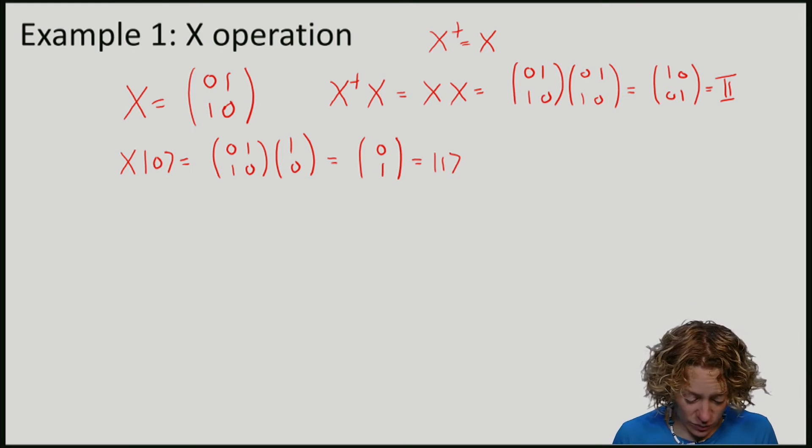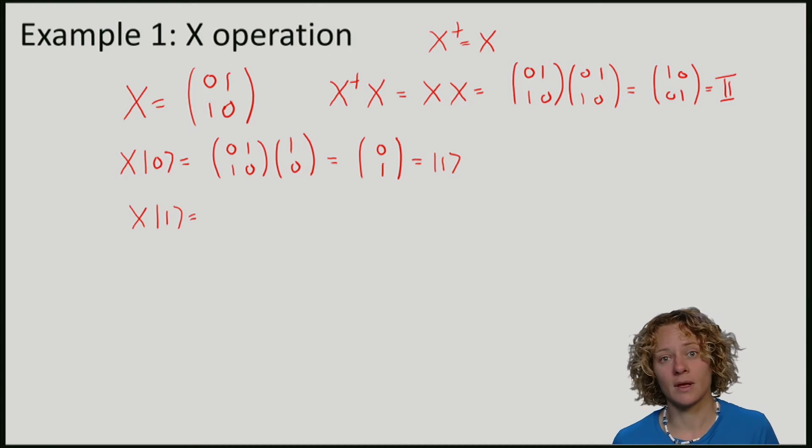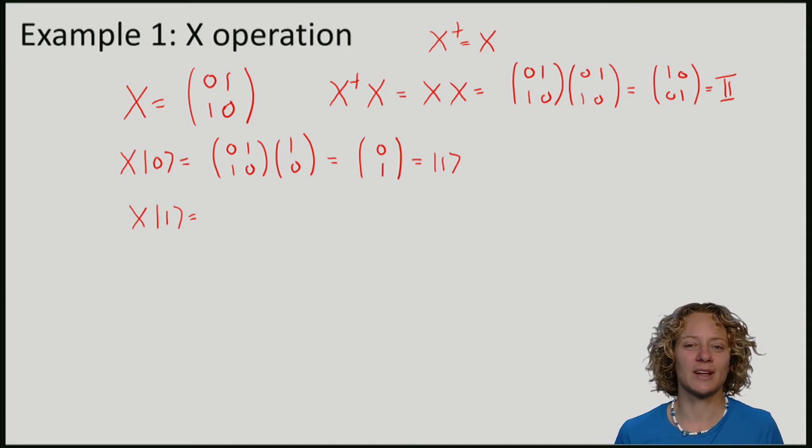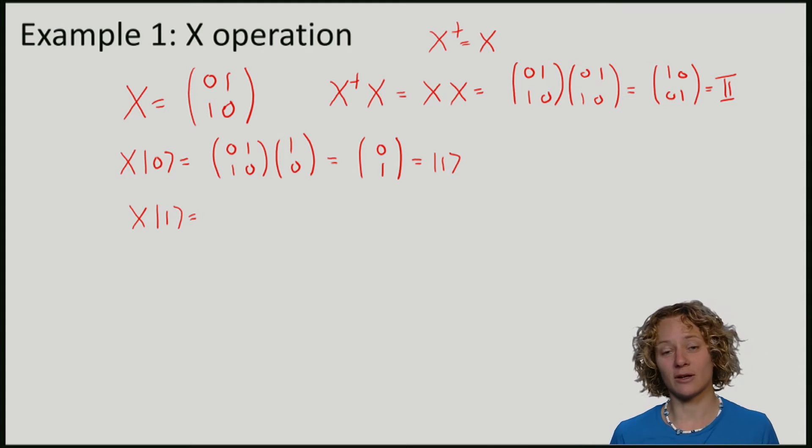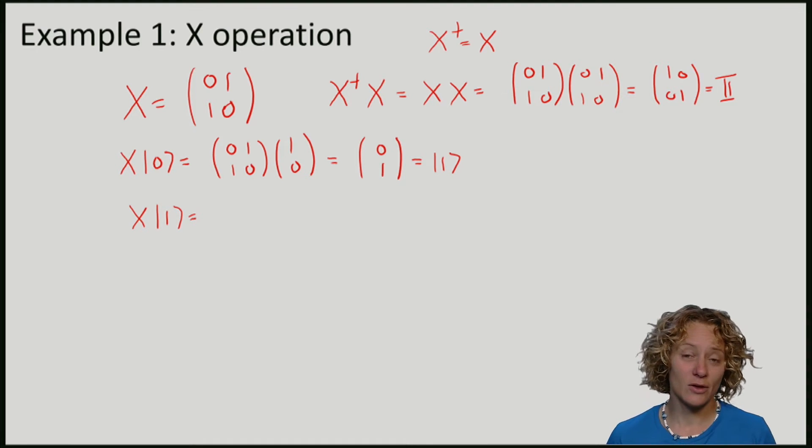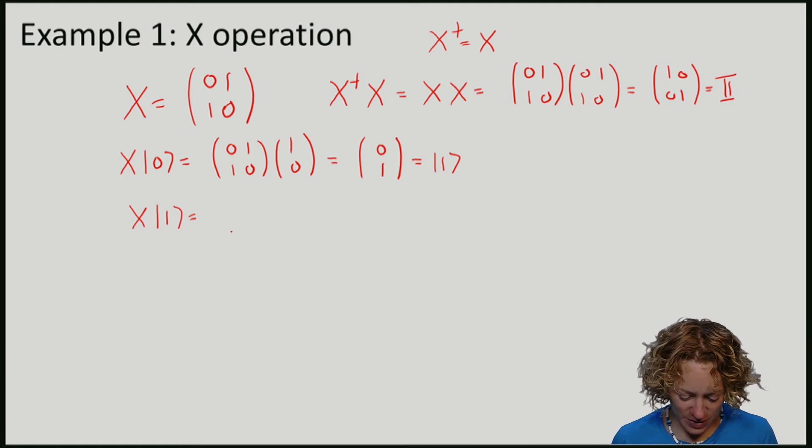Now what happens if I apply X to 1? Remember that the unitary operation has to preserve the inner product. And 0 and 1 are orthogonal, so we should get a vector which is again orthogonal to 1. Of course, we know what it is, namely it is 0, but you can easily verify that indeed, if I do this computation, I will get 0.